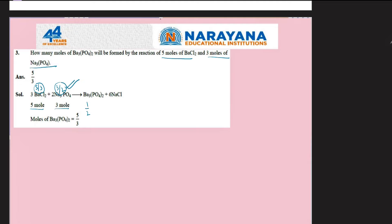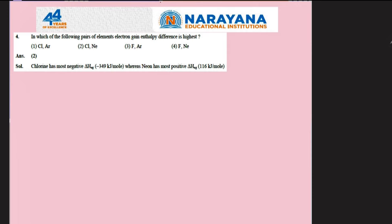In which of the following pairs of elements is the electron gain enthalpy difference the highest? Looking at the options, each includes one halogen and one noble gas. Chlorine has the most negative ΔH_EG, whereas among the noble gases, neon has the most positive ΔH_EG. The difference between the most negative and most positive ΔH_EG will be maximum for chlorine and neon — that is the second option.